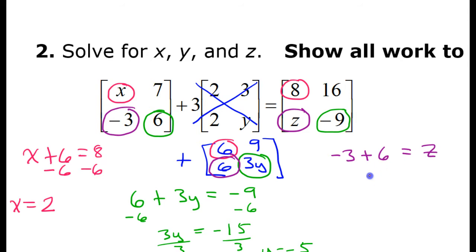Well, negative 3 plus 6 is simply 3. So that means z is equal to 3.